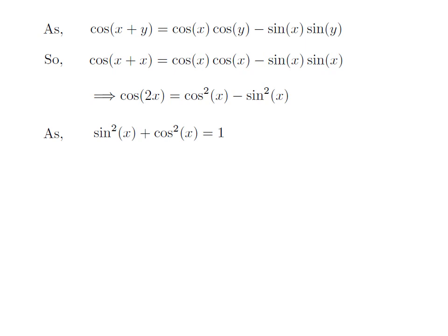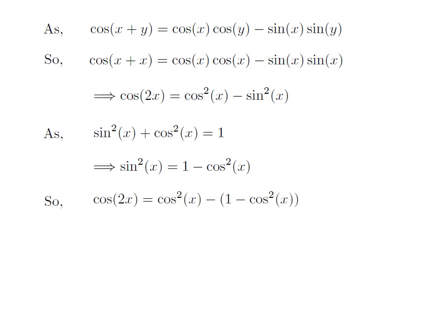To find out the second identity for cosine of 2x, let's apply the famous identity: square of sine of x plus square of cosine of x is equal to 1. I have taken the square of cosine of x to the right in the above identity. So I got square of sine of x is equal to 1 minus square of cosine of x.